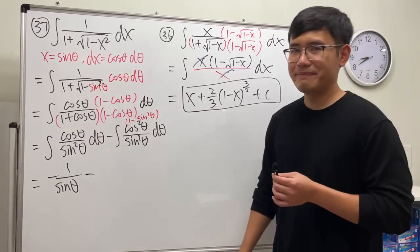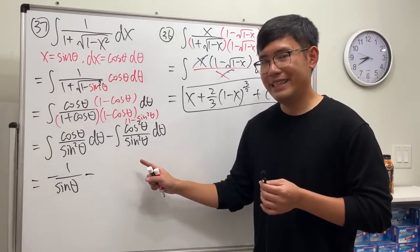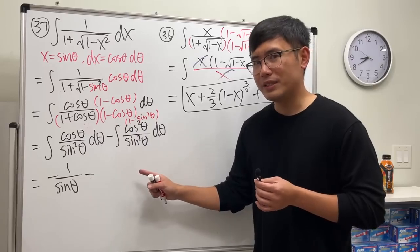Sine square is called cosecant square, and the integral of cosecant square is cotangent.